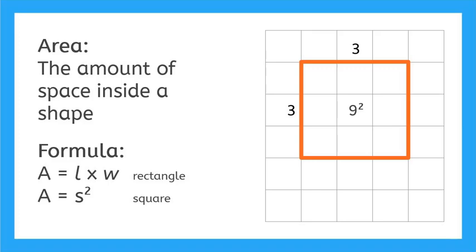For a square we have side squared and that really just means you take your side and you multiply it by itself and that will give you your area. Let's try one.